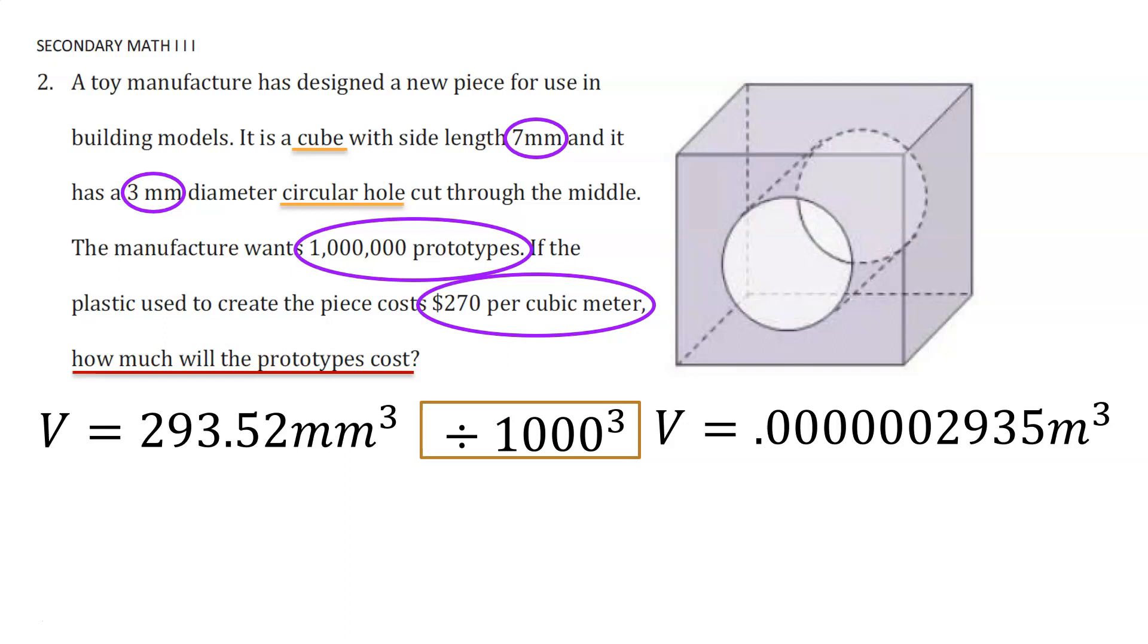But we need to find the volume of 1 million toy pieces so that we can know how much material in total is needed by the toy company. By multiplying the volume of one toy piece by 1 million, we get this volume.